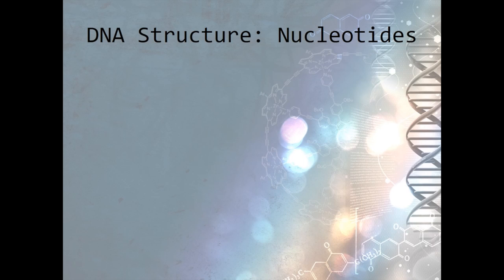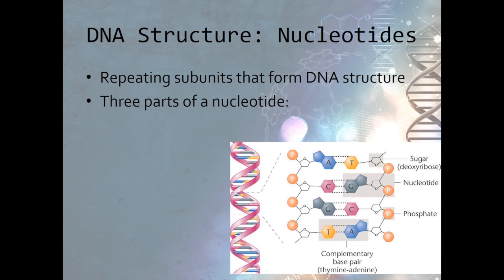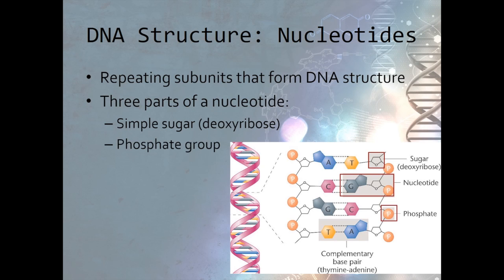Let's take a closer look at the DNA structure to find out how all the genetic information is encoded. We'll start with the nucleotides, which are the repeating subunits that form the DNA structure. If we look at this diagram of a nucleotide, we can see that there are three parts that form the nucleotide. There is a simple sugar, called deoxyribose, a phosphate group, and a nitrogen base.